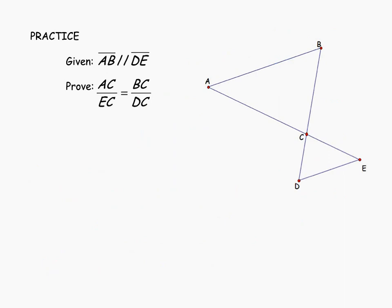To end this lesson, here's a practice proof for you to try. You're given that AB is parallel to DE, and asked to prove that AC to EC is proportional to BC to DC. Keep in mind that to prove a proportion like that, you would have to show that a pair of triangles is similar first.